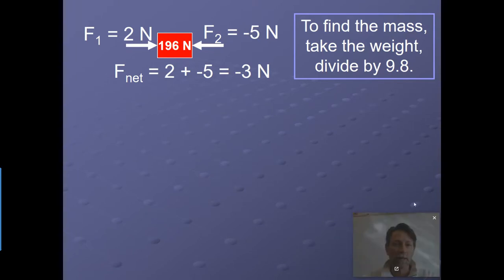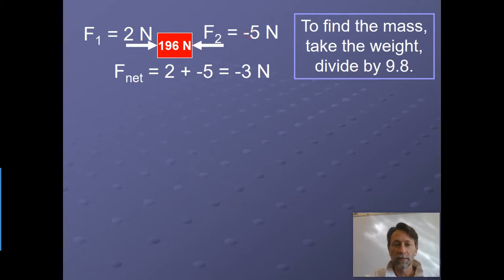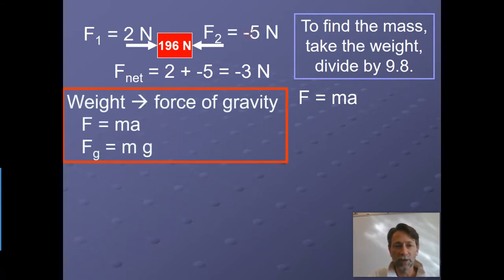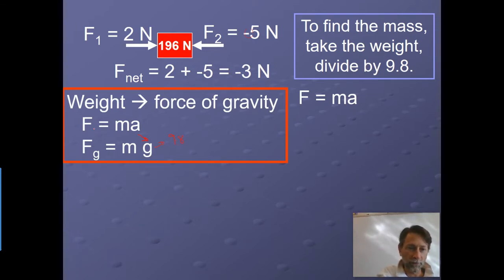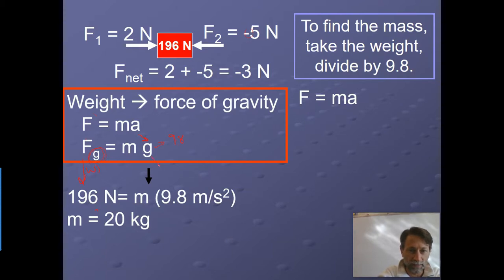For example, we have a block of 196 Newtons. From the first video: you push right with 2 Newtons, your buddy pushes left with negative 5 Newtons, giving a net force of negative 3 Newtons. To find the acceleration using F equals ma, we first need the mass. Gravity is a special form of F equals ma — using 9.8 m/s² for the acceleration of gravity, the force is the weight. So plugging in 196 Newtons as weight and 9.8 as acceleration, I solve for a mass of 20 kilograms.